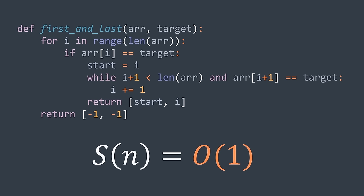For the time complexity: when target exists, we traverse the part before its first position then its sequence of occurrences. When it doesn't, we traverse the whole array. In both cases, we visit at most n elements, where n is the number of elements of r — we get O(n) time complexity. And O(1) space complexity because we're just using integer variables.